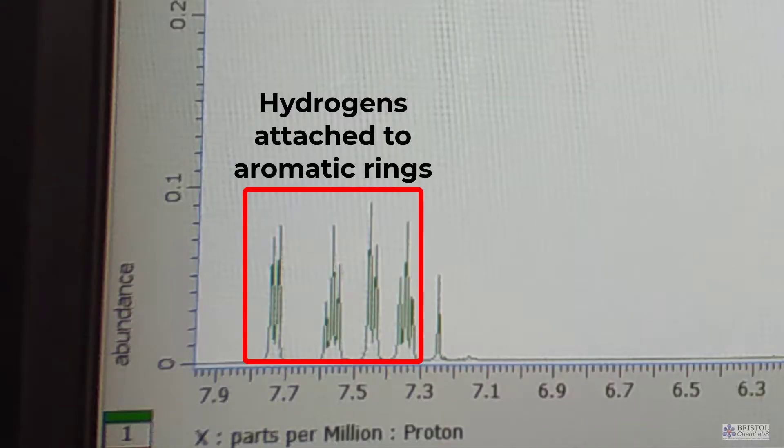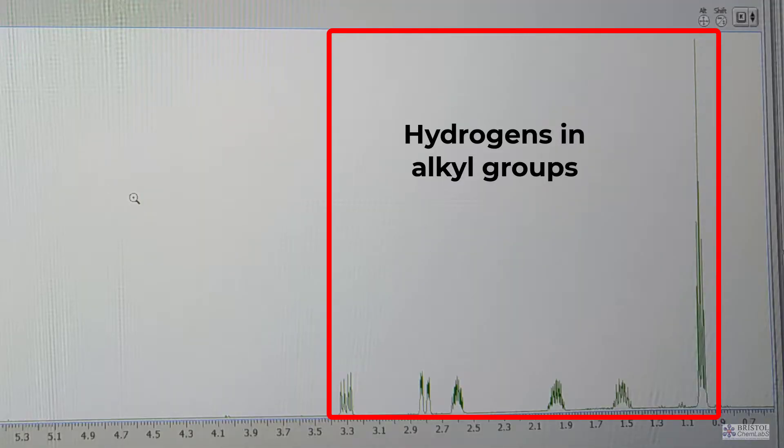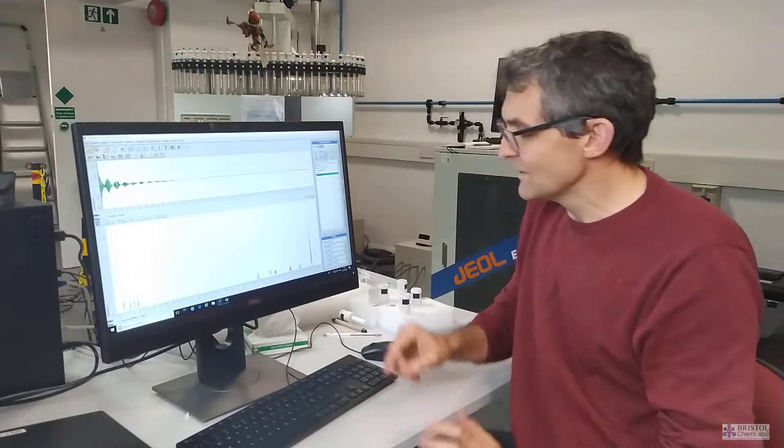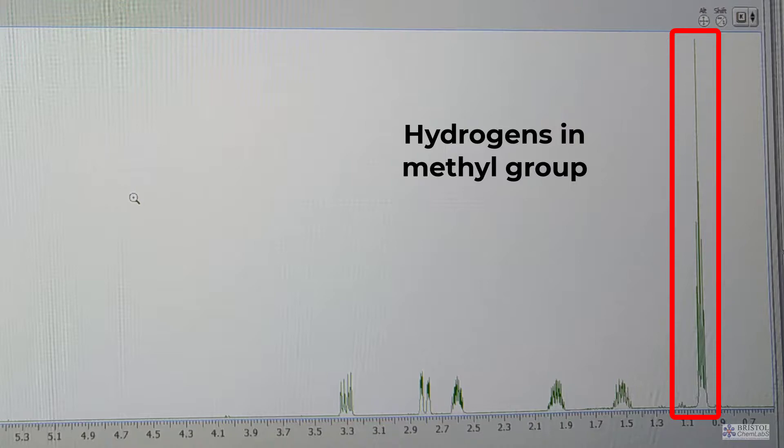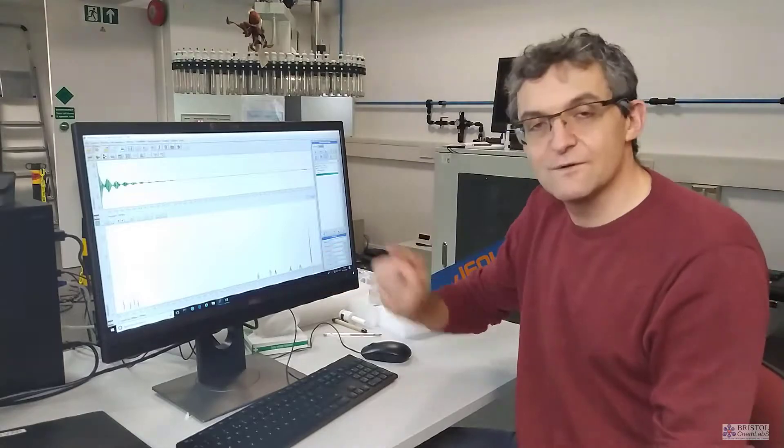We've got four signals down this end, and those are hydrogens that are attached to benzene rings or aromatic rings. So I know I've got a benzene ring in this sample, and it's got four hydrogens attached to it, and therefore it's got two other things attached to it. Down here, I've got six signals. Those are hydrogens attached to what we call sp3 hybridized carbon. This really big one here is a methyl group, because you've got three hydrogens on the methyl group and they're all identical to each other. So they give this very strong signal.